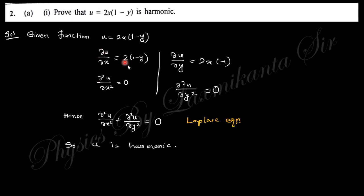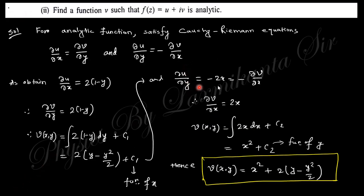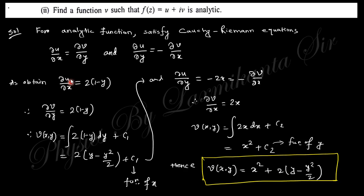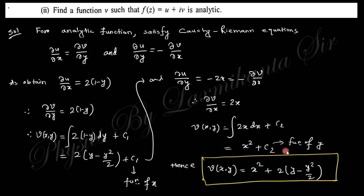We already found ∂u/∂x = 2(1−y) and ∂u/∂y = −2x. Using the Cauchy-Riemann equations: ∂v/∂y = 2(1−y), and integrating gives v = 2y − y²/2 plus a function of x. Also, ∂v/∂x = 2x from −∂u/∂y, so integrating gives x² plus a function of y.